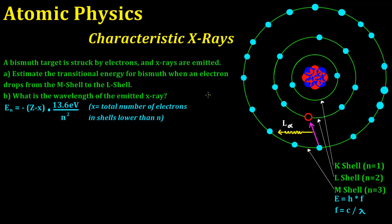Bismuth has Z equals 83, meaning there are 83 protons in the nucleus and also 83 electrons. I've drawn the first three shells: the K shell, the L shell, and the M shell. The K shell normally has 2 electrons, the L shell normally has 8 electrons, and the M shell normally has 18 electrons.